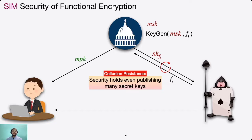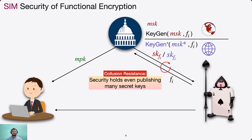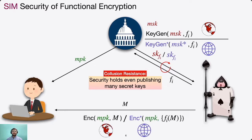Simulation security of Functional Encryption is defined by two worlds. In the real world, the challenger runs all algorithms honestly. In the ideal world, the challenger runs a simulated version. The adversary submits a single challenge message, and in the real world the challenger computes the challenge ciphertext using M0, while in the ideal world it uses the functional values of M0 for all queried functions. For post-challenge secret key queries, the challenger can use functional values directly. The adversary cannot distinguish between the real and ideal world, so it can learn only the functional values from the ciphertext.